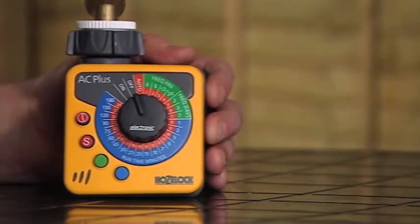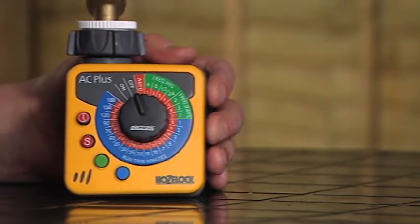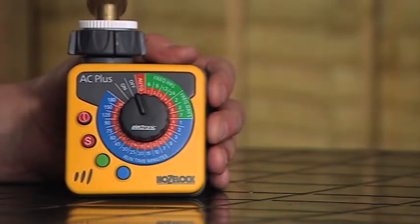When we've decided that we then need to tell the computer when to start, how long to run for and how many times a day this has to occur. So the first thing we have to do is tell the computer what the current time of day it is.